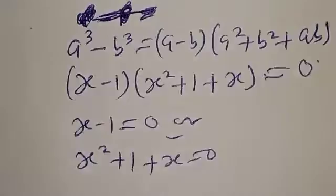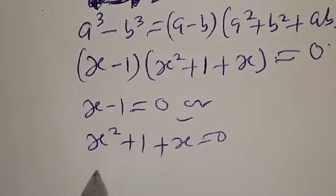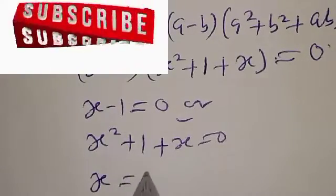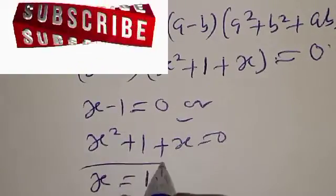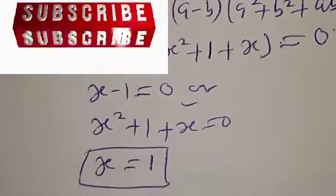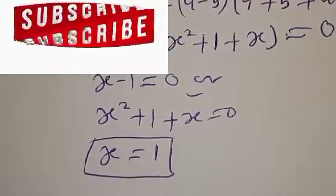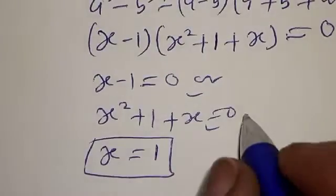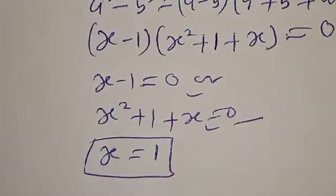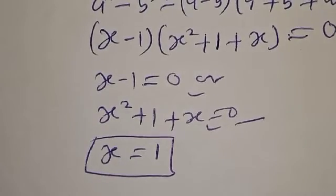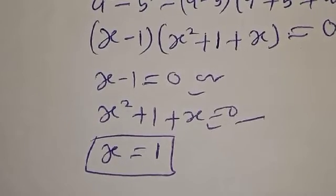From the first factor, s is equal to 1. That is one of the solutions for s. From the second factor, s² plus s plus 1 equal to 0, which is a quadratic equation. Let's solve it using the quadratic general formula.